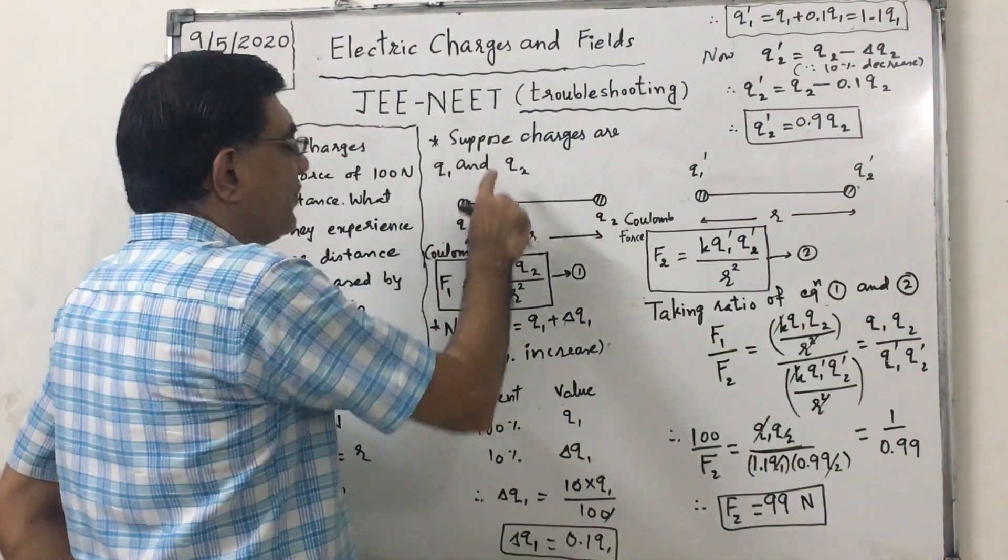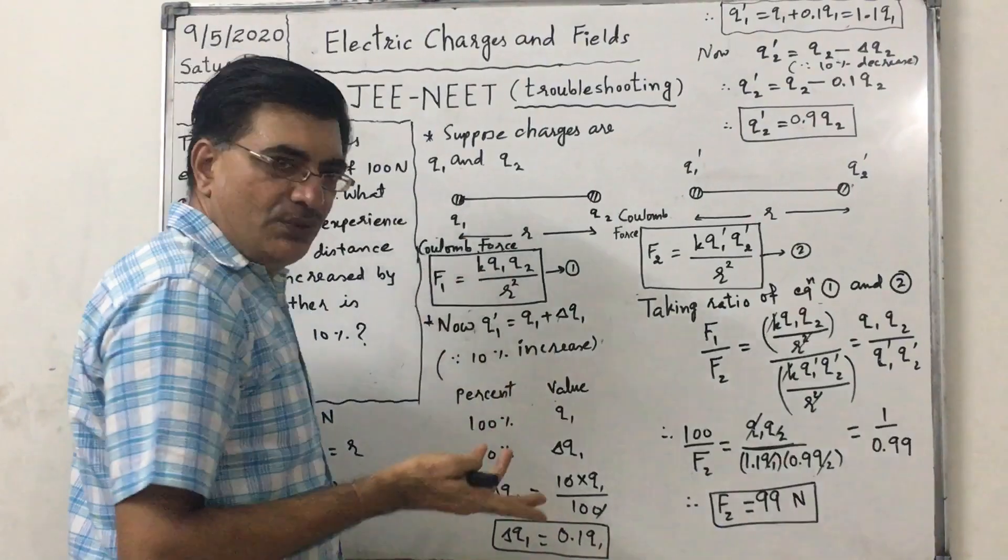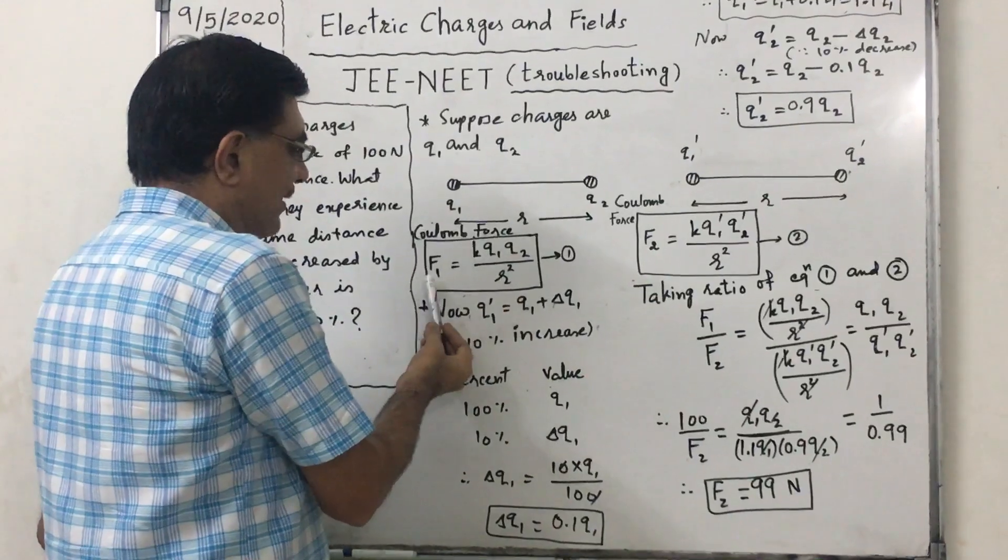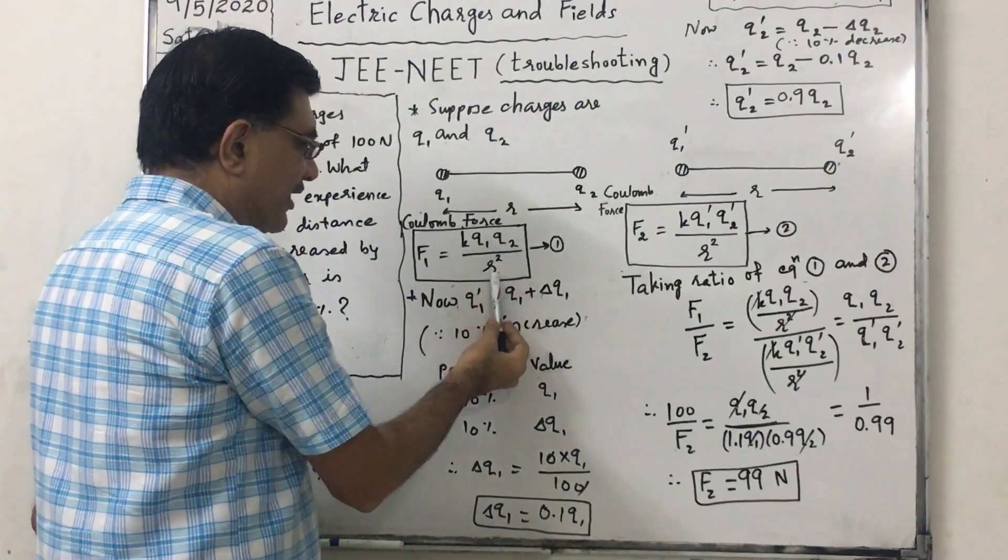Now suppose the charges are Q1 and Q2. Distance between them is R. So Coulomb force is F1 equals K Q1 Q2 upon R squared.